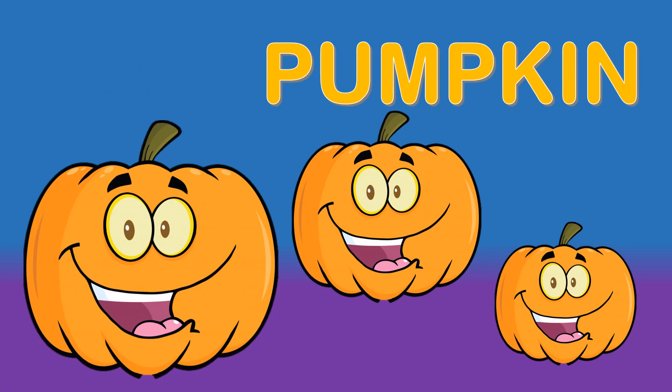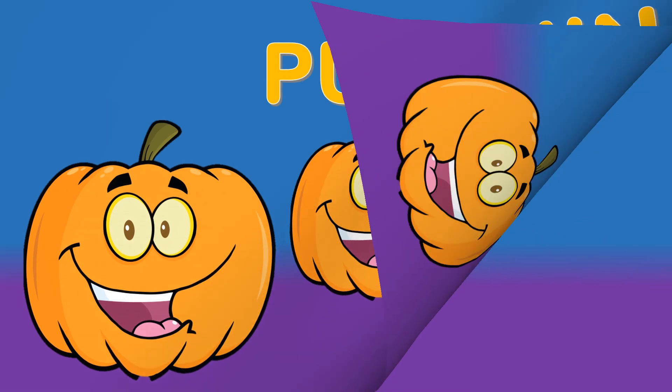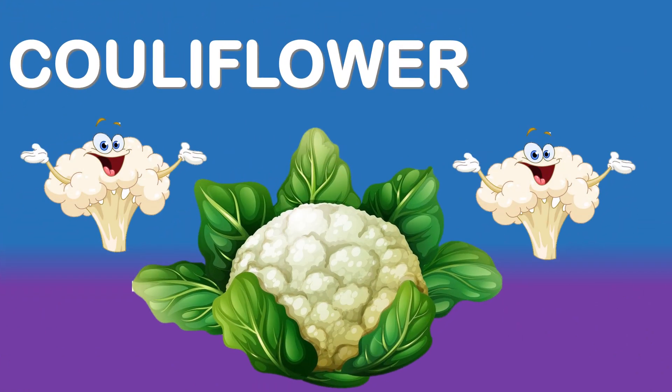Pumpkin. P-U-M-P-K-I-N. Pumpkin is an orange vegetable. Cauliflower. C-O-U-L-I-F-L-O-W-E-R. Cauliflower is a white vegetable.